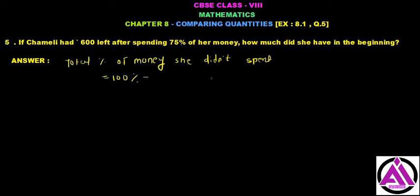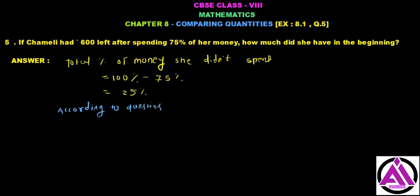According to the question, Chamele spent 75% of her money. She did not spend 25% of her money. So 25% of her money equals 600 rupees.